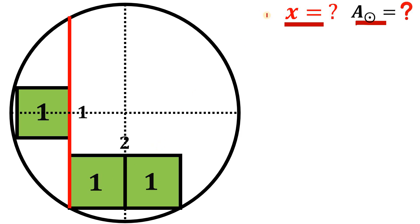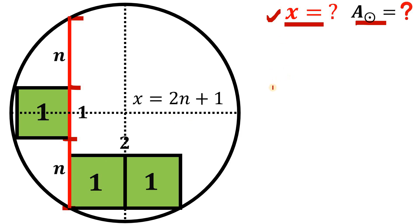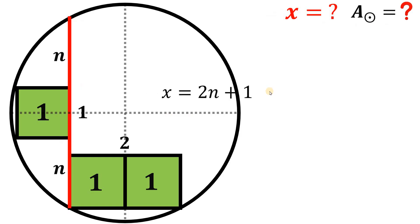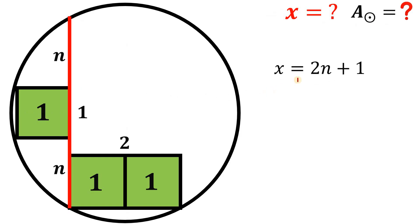Now let's solve for the value of x first. Let's call the length of this segment n. By the symmetry of this figure, the corresponding segment on the bottom part is also n. Therefore, segment x can be rewritten as 2n plus 1. The goal is now to find the value of x, which is equivalent to 2n plus 1.